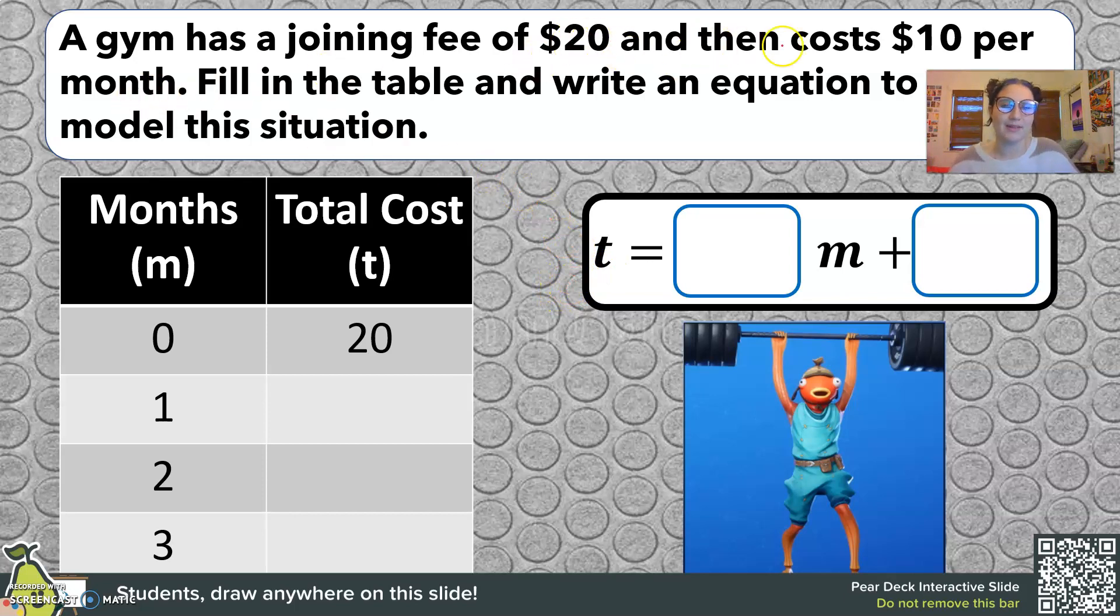A gym has a joining fee of $20 and then costs $10 per month. Fill in the table and write an equation to model this situation. I want to start with my table. I'm going to use m for months and t for total cost. Sometimes we can change our variables so that it makes more sense for our problem. But we always have the x values on the left side of our table and the y values on the right side. So this is also like x and y, but we're going to use m and t.